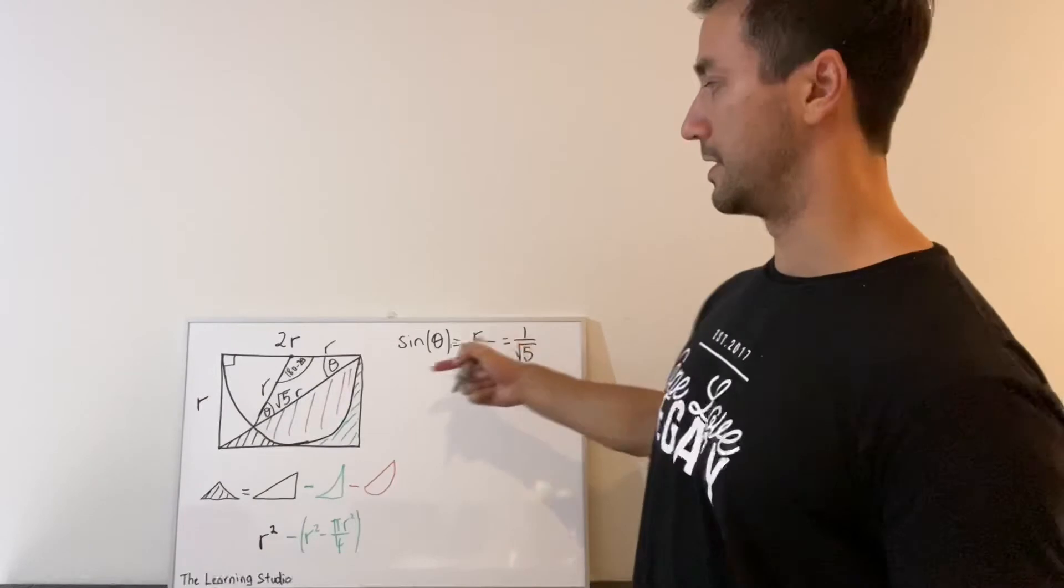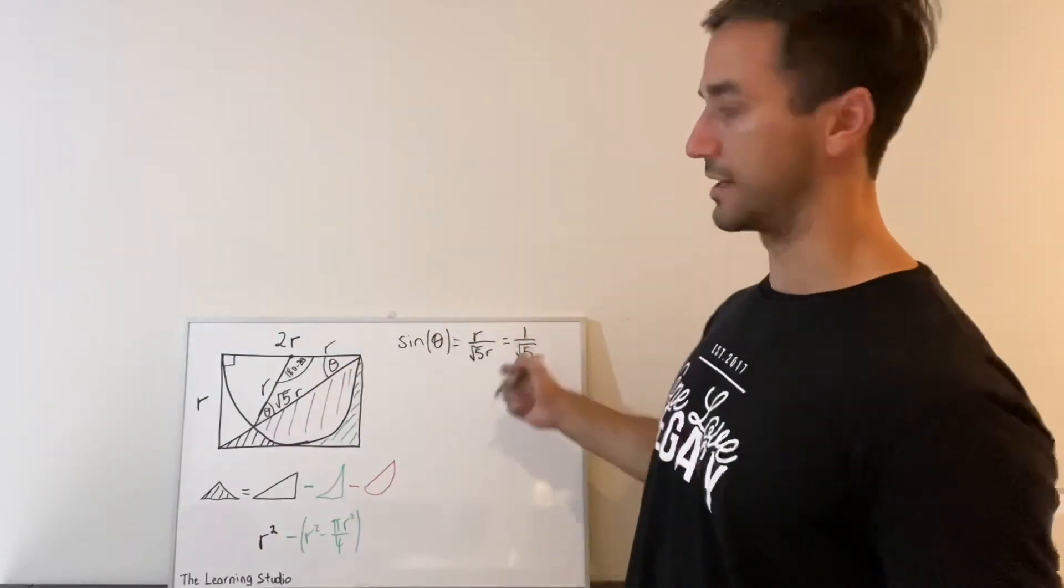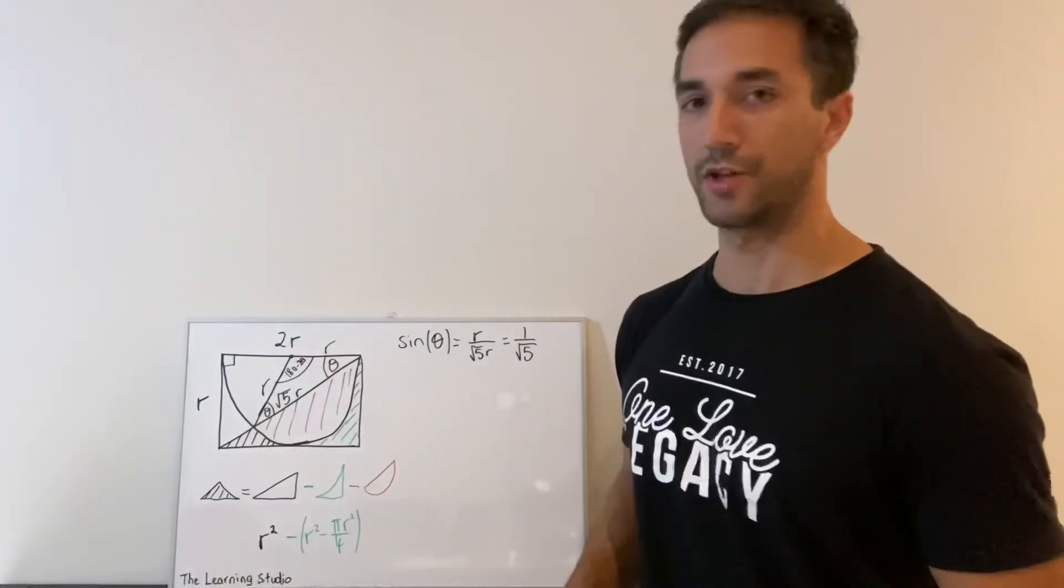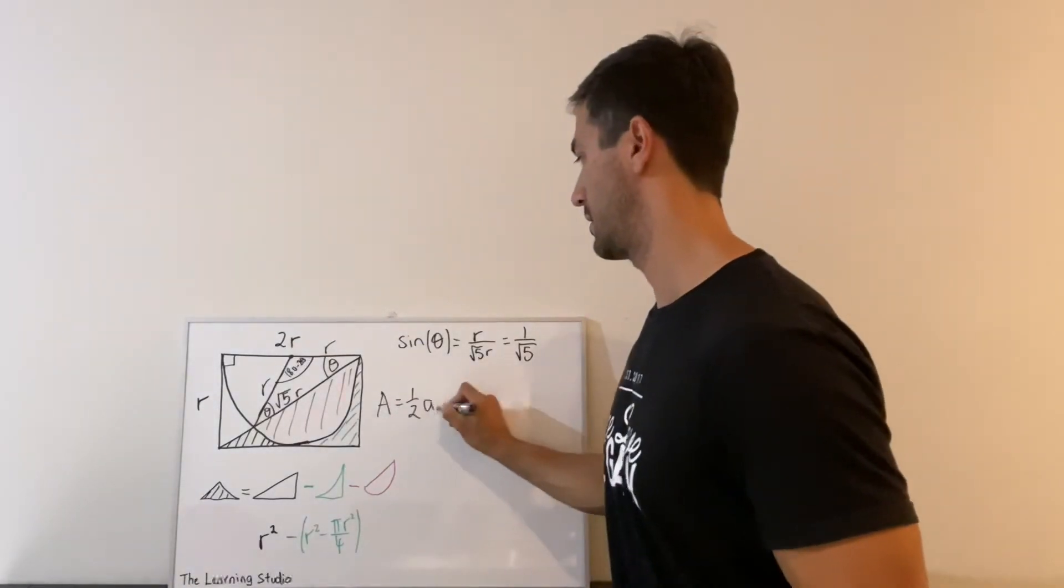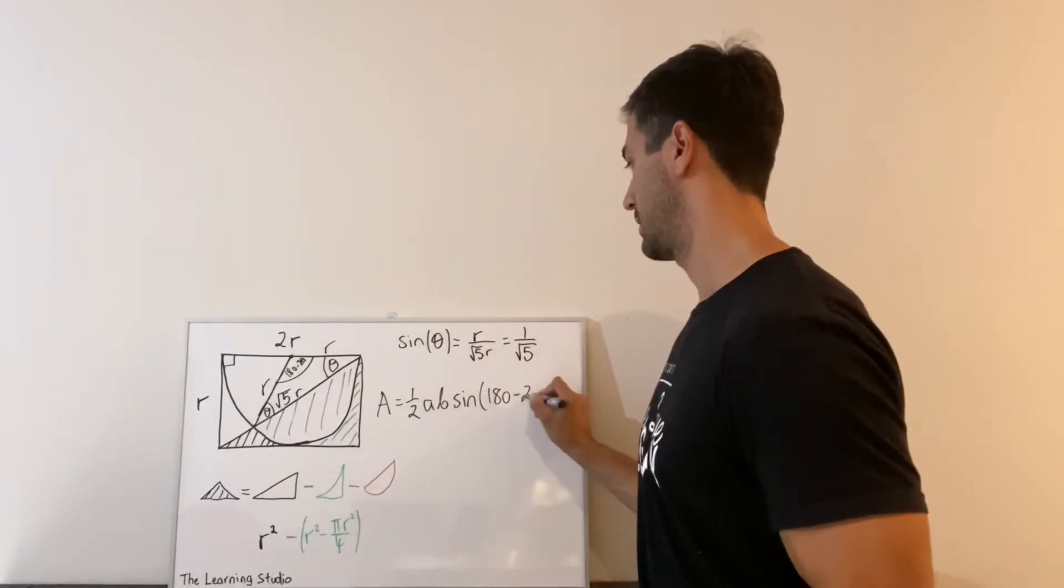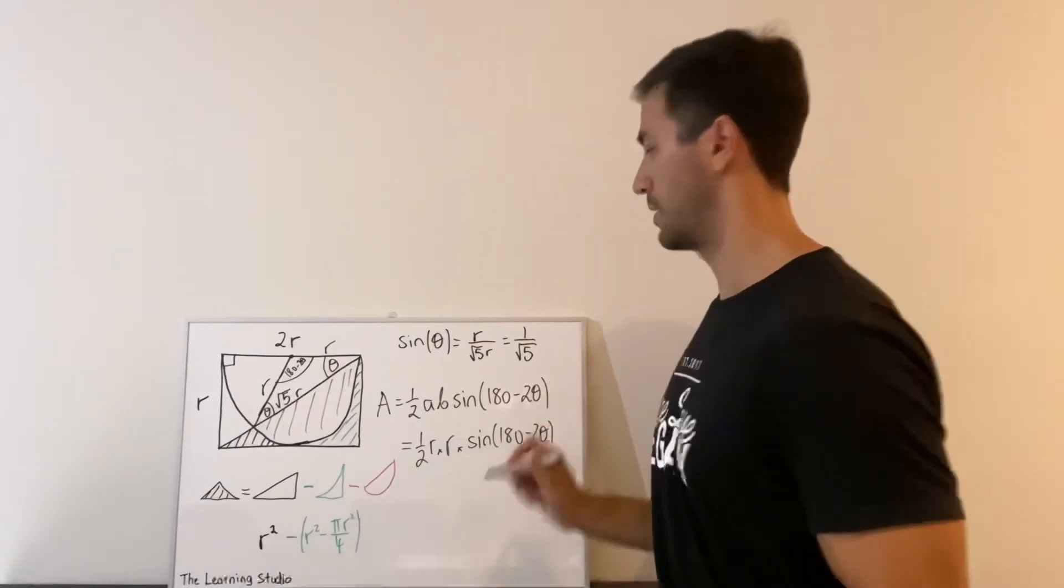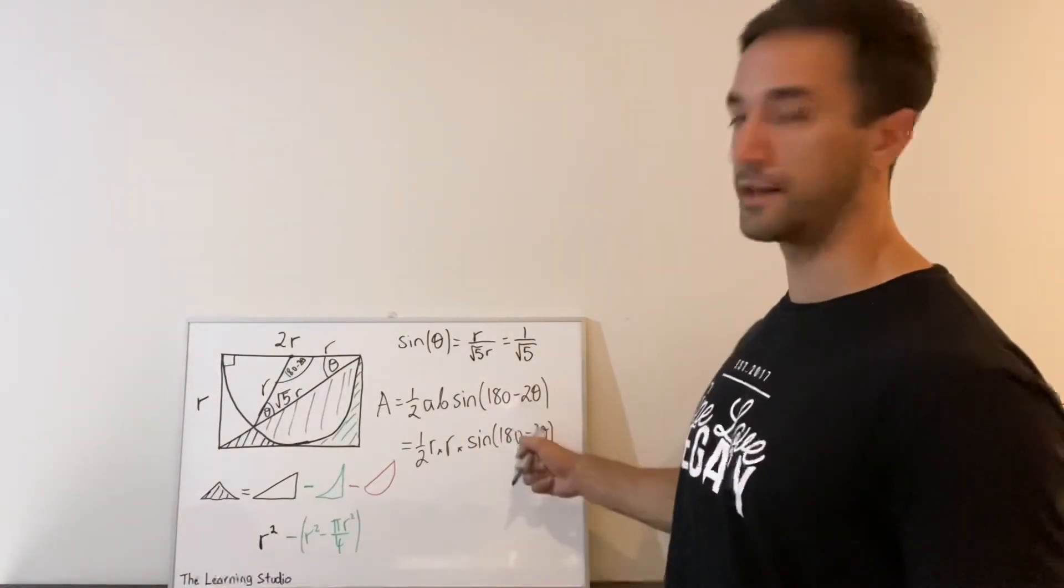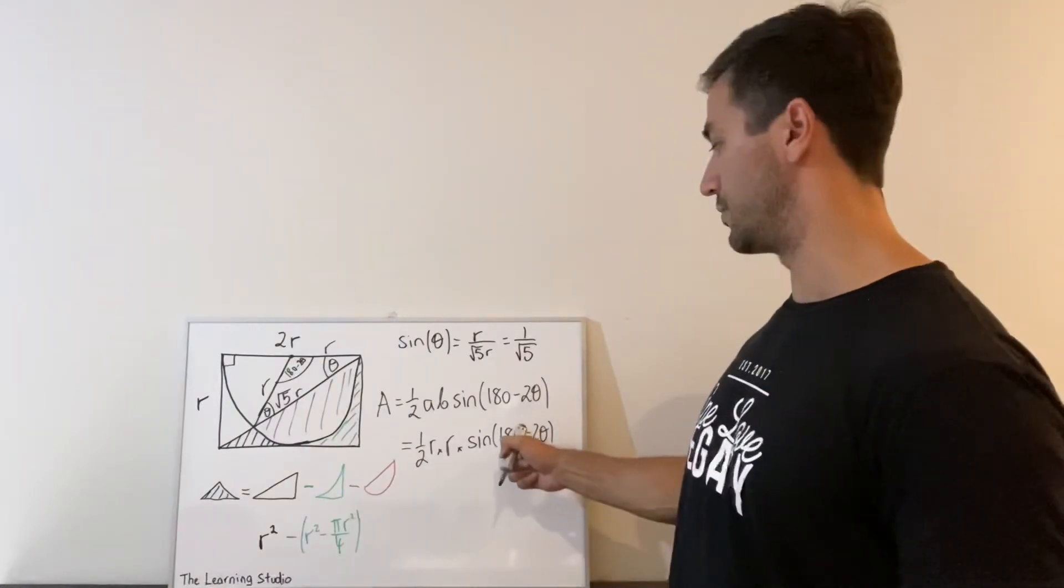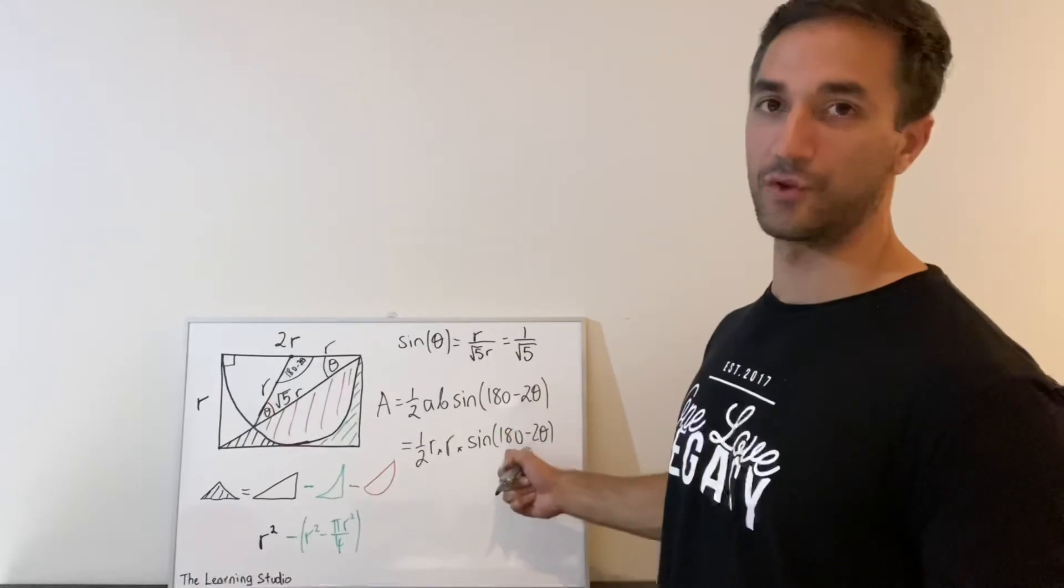And we're going to use our area formula that involves sine. So we have a nice expression for sine theta. So now the area of our triangle we can write this way. All right, so then the first thing that we can do here is use an identity here that if you look at 180 minus 2 theta, sine of that is the same as just sine of 2 theta.